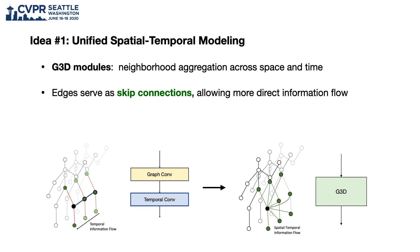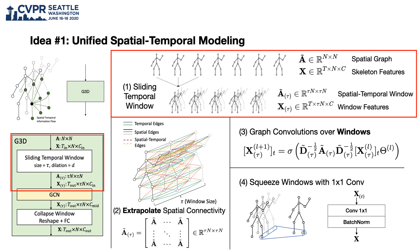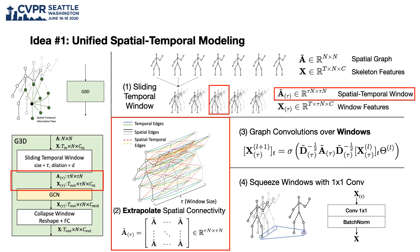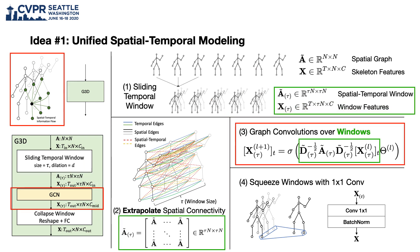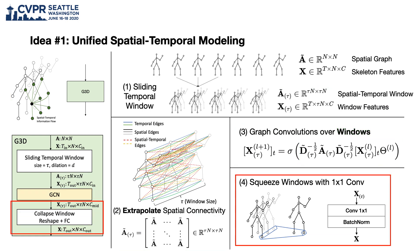Ideally, we want to facilitate information flow within the spatial-temporal graph. To achieve this, we propose G3D modules, which unify spatial and temporal aggregation into a single unit by introducing edges that span across multiple skeleton graphs. Here we show an overview of how it works. First, we perform a sliding temporal window over the input graph sequence and batch skeletons into a larger spatial-temporal graph. Next, we extrapolate the spatial connectivity patterns directly into the spatial-temporal domain. Then, to propagate features, we perform the same graph convolution over these windows. Finally, we squeeze the window features for subsequent layers.